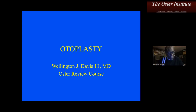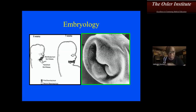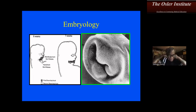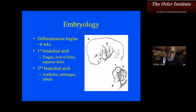Starting off with otoplasty — a little background on the ear embryology. The boards occasionally ask questions on this topic, so it's something you need to go back and memorize. In the first six weeks, we have the formation of the mandibular arch and the hyoid arch contributing to the ear helix. There's a first and second branchial arch involved. It's good to put this on a card and review it a couple days before the exam.